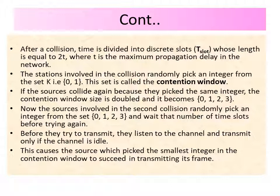If the stations collide again, they pick from the same type of set but the contention window doubles to {0, 1, 2, 3}. The stations involved in the second collision now pick a number from {0, 1, 2, 3} and wait for that many time slots before trying again. Before transmitting, they listen to the channel first — if it is busy they wait; if it is idle they send. The station that picks the smallest integer transmits first. For example, if A picks 0 and B picks 1, A transmits first, then B, so no collision occurs.